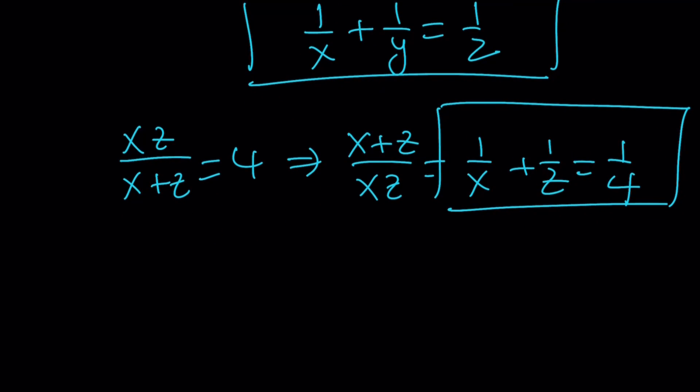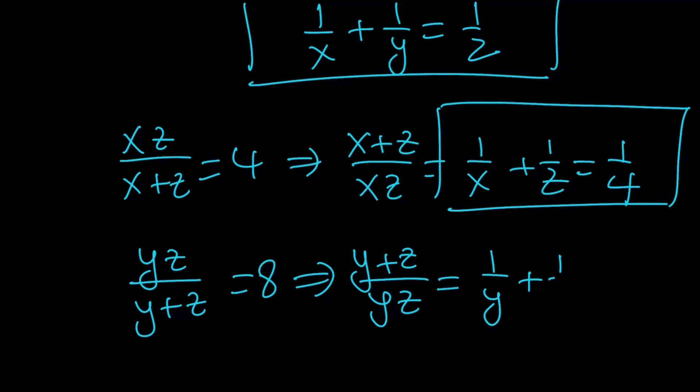And the last one, last but not least, whatever that means, yz over y plus z is equal to eight. And when you flip y plus z over yz, and you write it that way, this is equivalent to one over y. And I'm always writing things in alphabetical order, because of OCD. And this becomes one over eight.